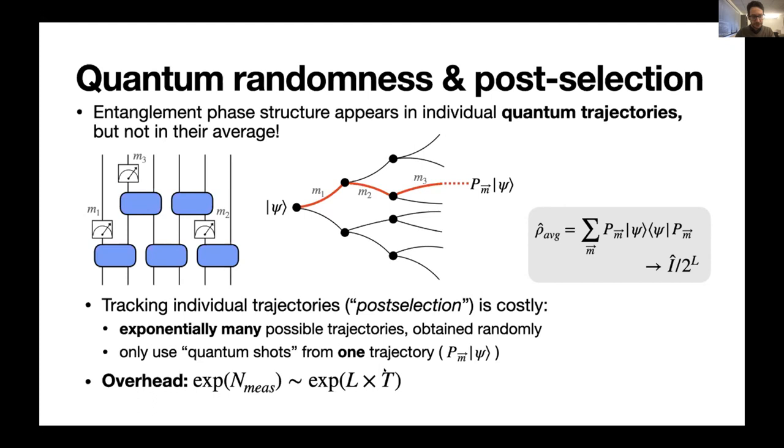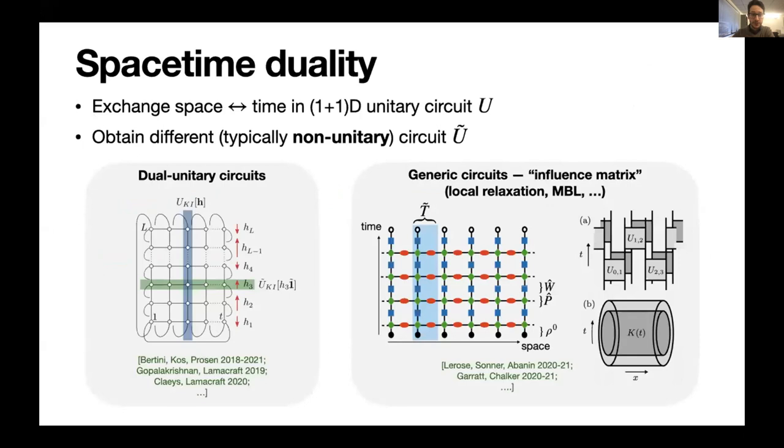So it's imperative to find ways of doing better than this and make this physics accessible. So there are proposals out there on some cases of these dynamics, but the one that I'm going to focus on is one that we proposed recently, which is based on the idea of spacetime duality. So in simple terms, the idea is to consider a one plus one dimensional quantum circuit and exchange the arrows of space and time. And in doing so, we obtain a different circuit, which generically is not unitary itself. And we can try to study this non-unitary circuit by using things we've learned about unitary dynamics.